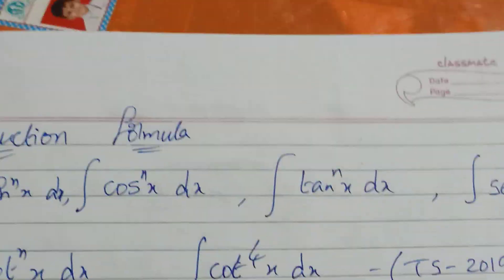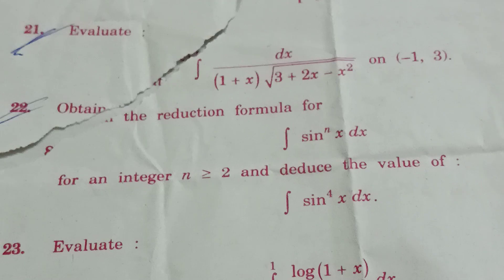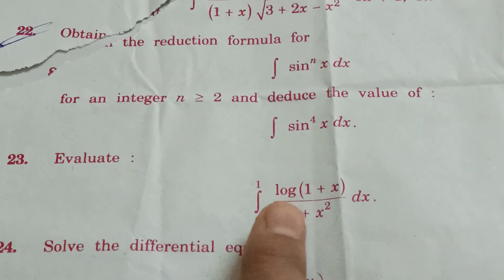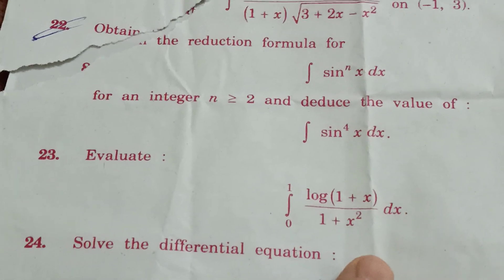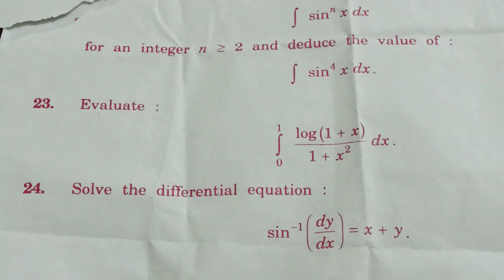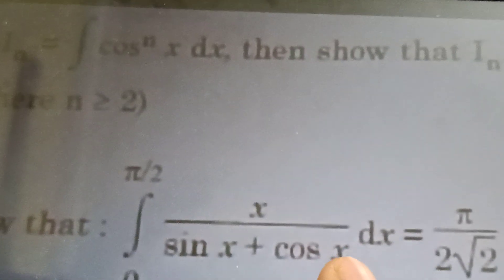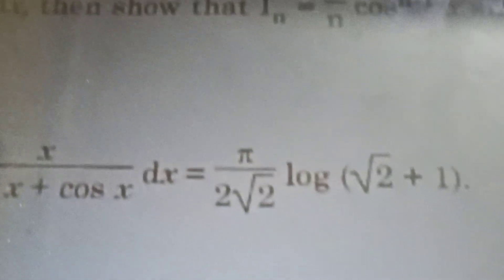We are prepared for this. If we are ready for 6, reduction is 6. Next: definite integration. Integration of 0 to 1: log(1 + x) / (1 + x²) dx. We will be ready for last. This is the same approach. Integration of 0 to π/2: 1 / (sin x + cos x) dx equals π / (2√2). This approach is the same thing.